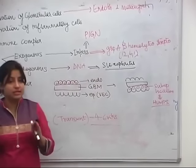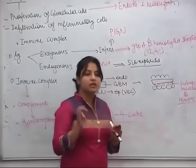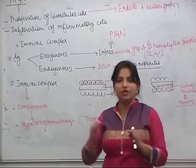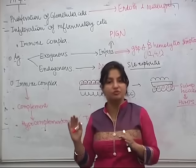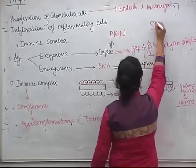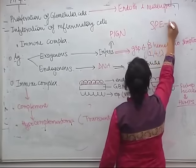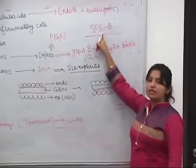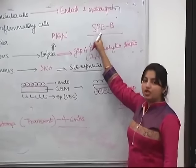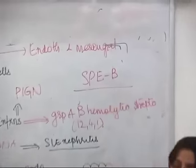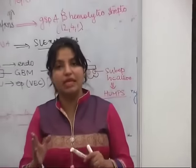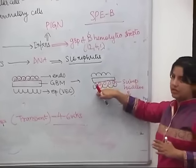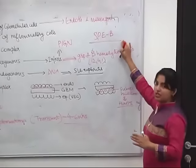A new change in the new Robbins: earlier Robbins gave a long list of antigens postulated to cause PSGN. The new Robbins says the most likely formal antigen is streptococcal pyrogenic exotoxin B. This is the most commonly implicated antigen, and it is also found in the humps. This is a new addition in Robbins 9th edition.